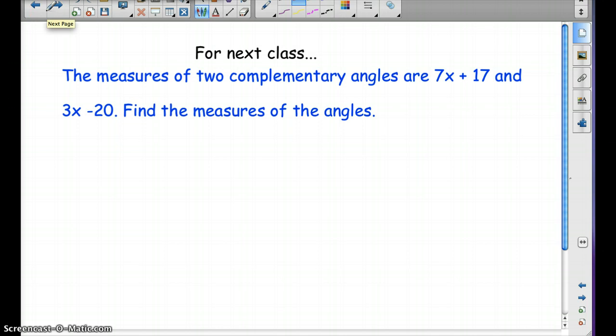So for next class, I want you to see if you can figure out what the two angles are. So you need to solve for X, and then you need to plug back in to find the angles. So the measures of two complementary angles are 7X plus 17 and 3X minus 20. Find the measures of the angles. So that's all I have for you. Have a wonderful day, and we'll see you in class.